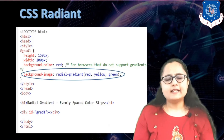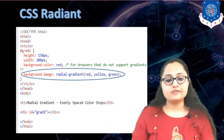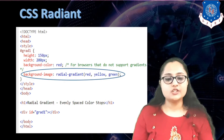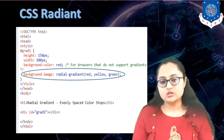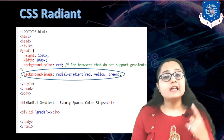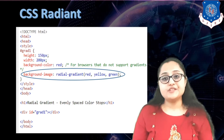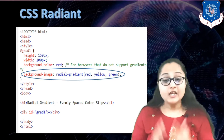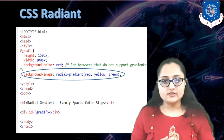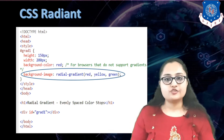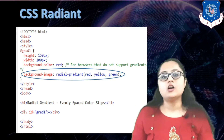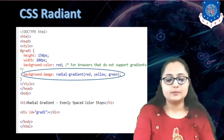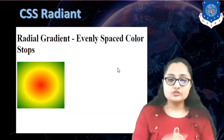Here I have one division with an id of grad1, and I have specified the height and width of that division. By default, if the browser does not support gradients, the color displayed will be red. If it supports a radial gradient, the property background-image is set to radial-gradient. I have specified three color stops: starting from the center, the first color is red, the second is yellow, and the third is green. This produces the output you can see — these are evenly spaced color stops.